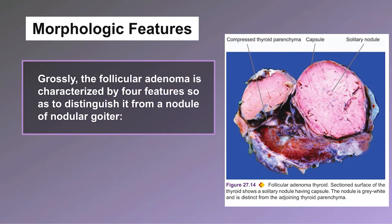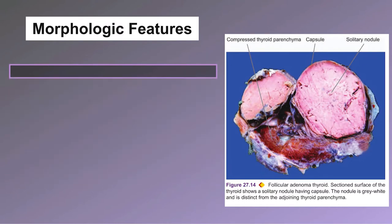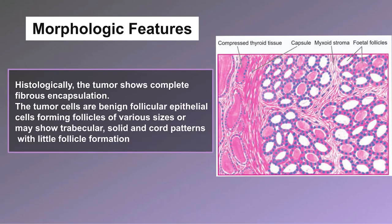Morphologic features — gross: The follicular adenoma is characterized by four features distinguishing it from a nodule of nodular goiter: 1) solitary nodule, 2) complete encapsulation, 3) clearly distinct architecture inside and outside the capsule, and 4) compression of the thyroid parenchyma outside the capsule. Usually an adenoma is small, up to three centimeters in diameter and spherical. On cut section it is gray-white to red-brown, less colloidal than the surrounding thyroid parenchyma, and may show degenerative changes such as fibrous scarring, focal calcification, hemorrhages, and cyst formation.